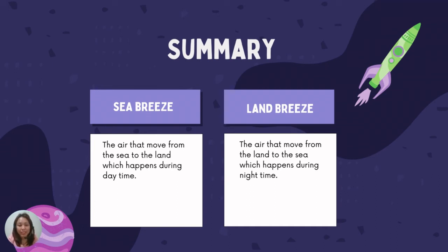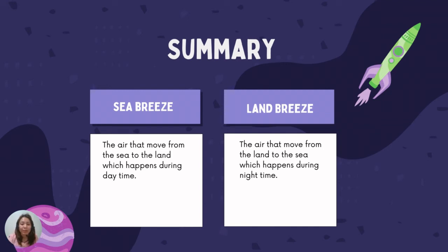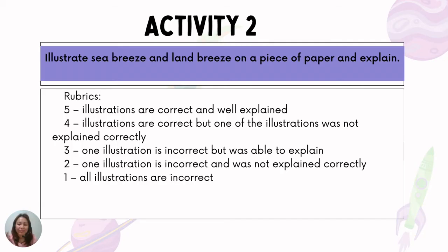To sum it up: sea breeze is the air that moves from the sea to the land, which happens during daytime. And land breeze is the air that moves from the land to the sea, which happens during nighttime.